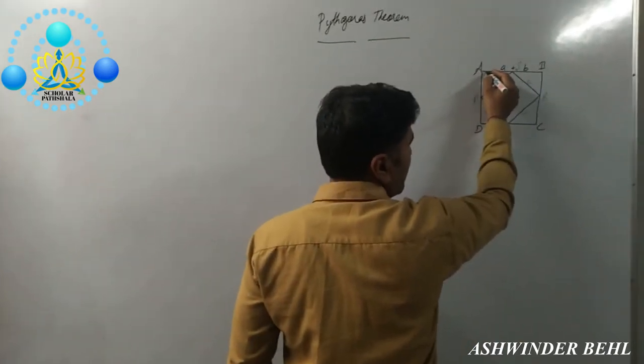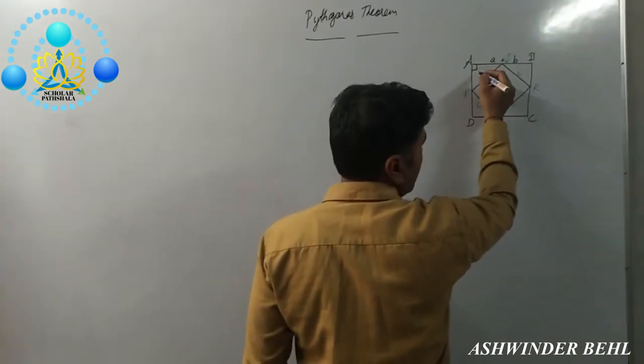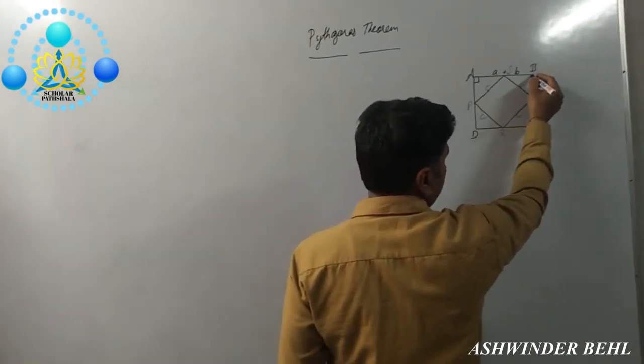We know very well the angle in a square is 90 degrees.